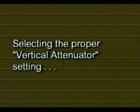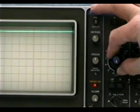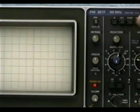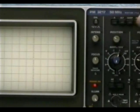Choosing the proper vertical attenuator setting is important. Selecting too low of a setting results in the trace deflection going beyond the measurement capabilities of the oscilloscope, which would be analogous to selecting too low a range on a voltmeter.